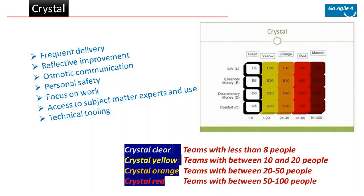Focus on work means team members should know what to work on next and be able to do it, requiring clear communication and documentation when required. Access to subject matter experts means team members should be able to get feedback from real users and experts as needed. Technical tooling refers to automated testing, configuration management, or continuous deployment — so that errors and mistakes can be caught quickly without human intervention, effectively using automation.